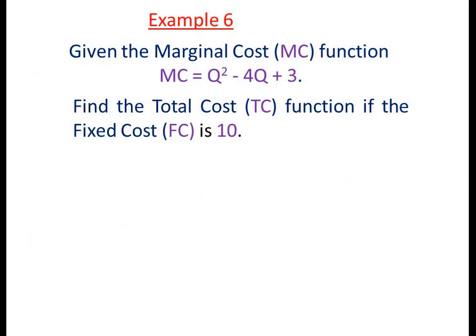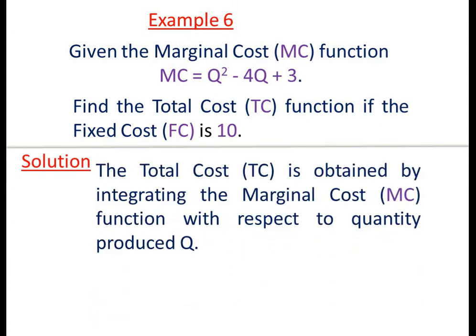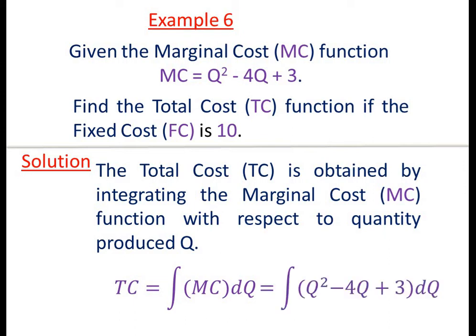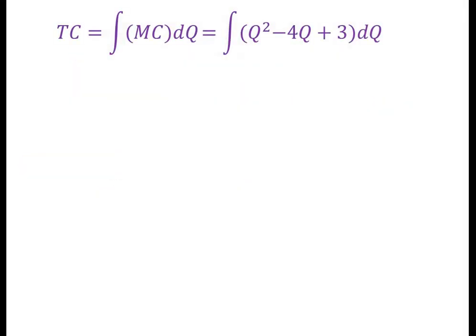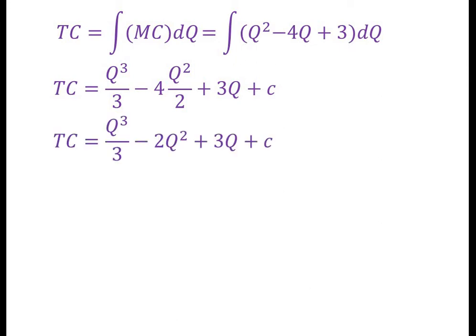Example 6: Given the marginal cost function MC = q² - 4q + 3, find the total cost (TC) function if the fixed cost (FC) is 10. The total cost TC is obtained by integrating the marginal cost MC function with respect to quantity q. So, TC = ∫MC dq = ∫(q² - 4q + 3) dq, giving TC = q³/3 - 4q²/2 + 3q + c, which simplifies to TC = q³/3 - 2q² + 3q + c, where c is a constant.